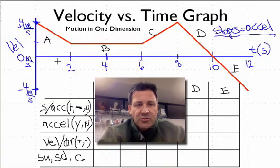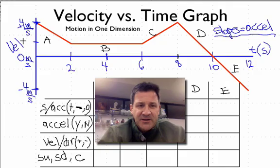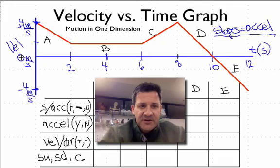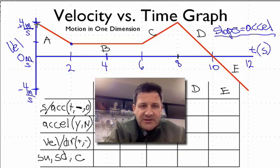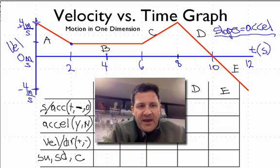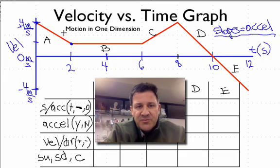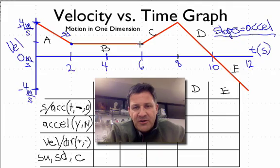The x-axis is time and the y-axis is velocity. Positive 4 meters per second is at the top, minus 4 meters per second at the bottom, and 0 meters per second in the middle. Let's look at each section A through E individually, focusing on the endpoints. In section A, we go from 4 meters per second down to 2 meters per second, both in the positive direction, so we're slowing down.